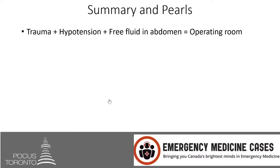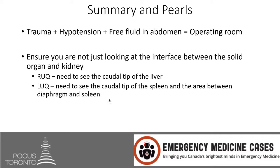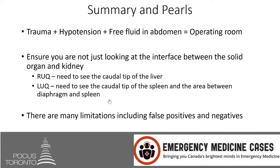In summary, if you have a hypotensive trauma patient with free fluid in their abdomen, you should be activating an operating room and getting the trauma surgeon involved. There is no value in bringing them to the CT scanner - CT scanners are where patients go to die in this scenario, as there's nothing therapeutic a CT scan can provide. The trauma surgeon will perform a trauma laparotomy to look for the source of bleeding. Ensure you're looking at the caudal tip of the liver in the right upper quadrant and the caudal tip of the spleen plus the subdiaphragmatic area in the left upper quadrant. Be aware of the many limitations including false positives and false negatives.